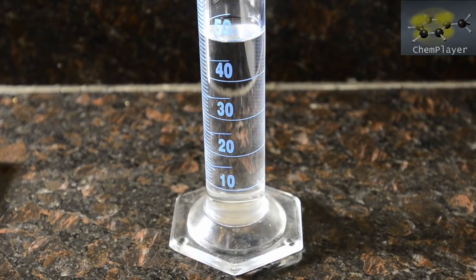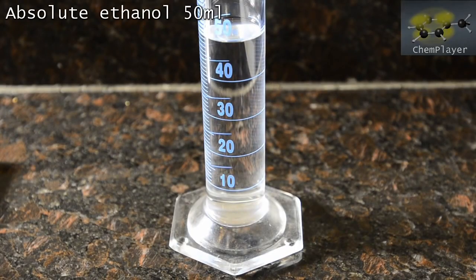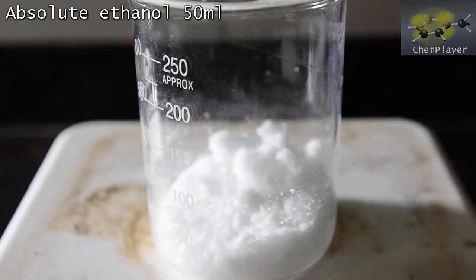Here we've got 50 mLs of absolute ethanol. Note that you can also use isopropanol for this reaction, and we tested it in a reaction run using potassium hydroxide, and it worked fine. Let's add this to the hydrazine sulfate.